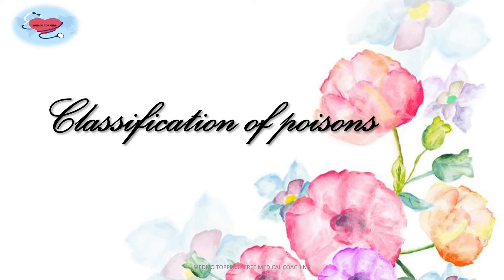Now, classifications of poisons. Poisons may be classified according to the chief symptoms which they produce. Mainly they can be classified into corrosives, irritants, systemic poisons, and miscellaneous poisons.